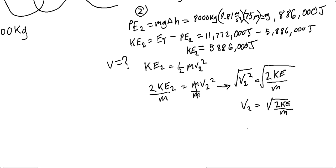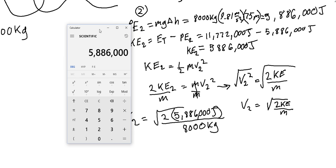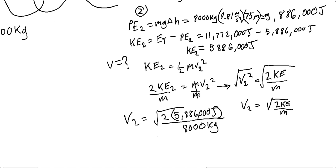Plugging in the numbers: v₂ is going to be equal to the square root of 2 times the kinetic energy, which is 5,886,000 joules, divided by the mass, which is 8,000 kilograms. Putting that in the calculator gives us 38.36 meters per second. So v₂ is approximately 38.6 meters per second.